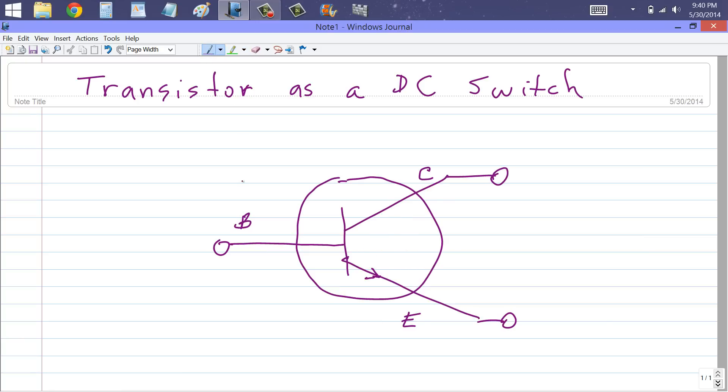E refers to the emitter, B to base, and C to collector. Normally the collector is positive with respect to the emitter in terms of direct current voltage, but we can change the voltage on the base to control what happens to the conductivity between the emitter and the collector.